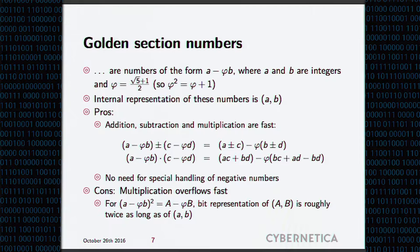There are also cons to this representation. One of the most burning ones is that multiplication overflows quite fast. So in this sense, this representation is similar to fixed point representation, where you also have lots of trouble with multiplication overflow. For instance, if you square your golden section number, your bit representation of the square is roughly twice as long as your representation for the original number, which means you get very fast overflow.